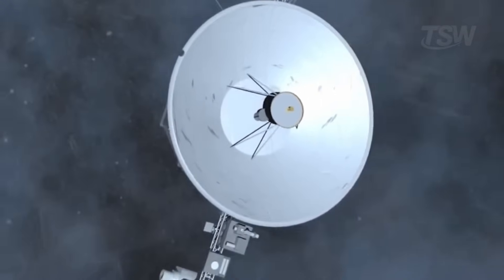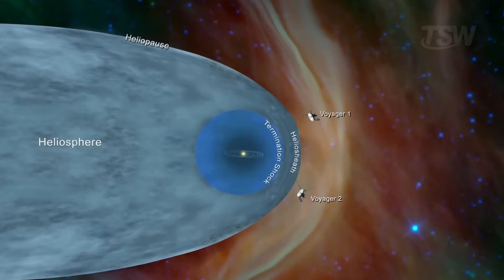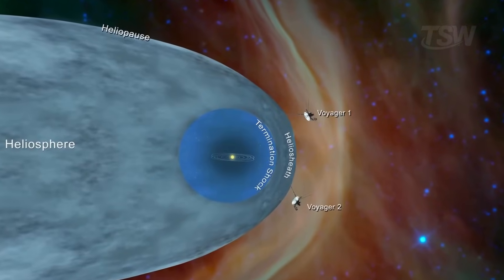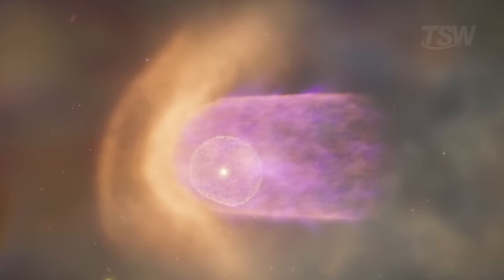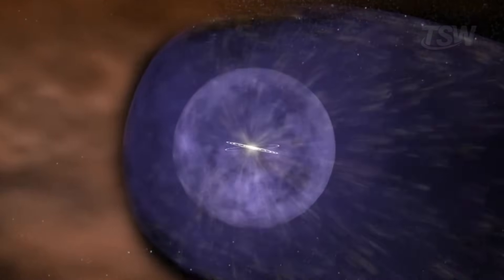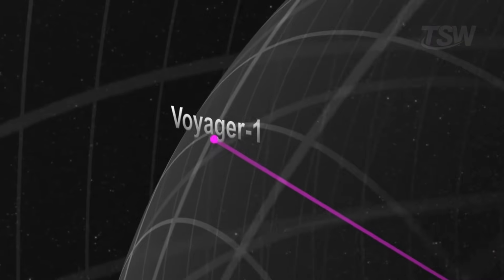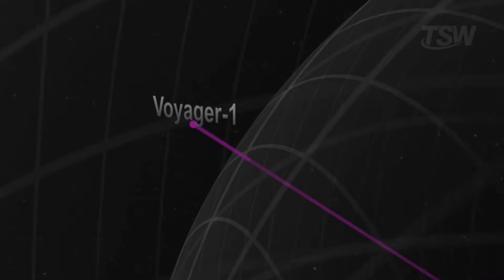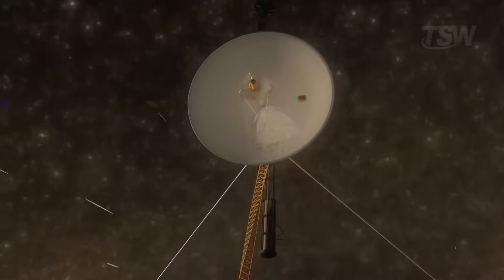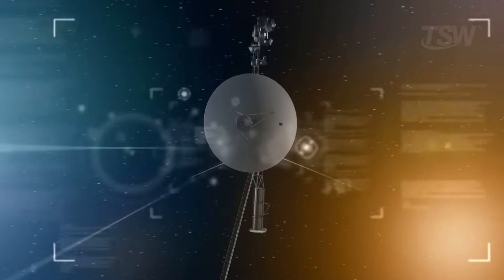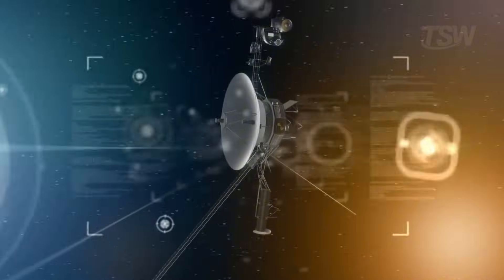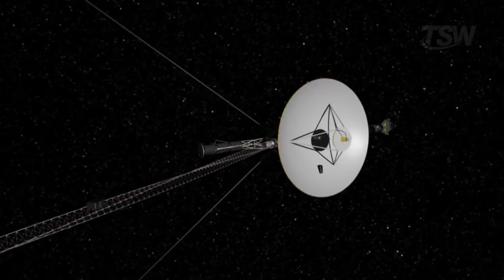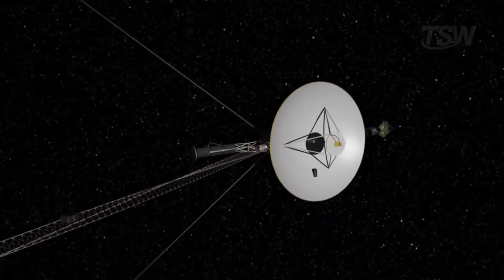Even the discussion about the heliosphere's shape leans on these data. Some models describe it with a comet-like tail, others prefer a more rounded outline, more recent ideas suggest a crescent shape because of magnetic dynamics. Voyager does not end the debate on its own, but it pins down anchor points that rule out hypotheses that do not match the measured environment. The simple fact of having a thermometer, a magnetometer, and an ear for plasma outside the solar bubble is already transformative.